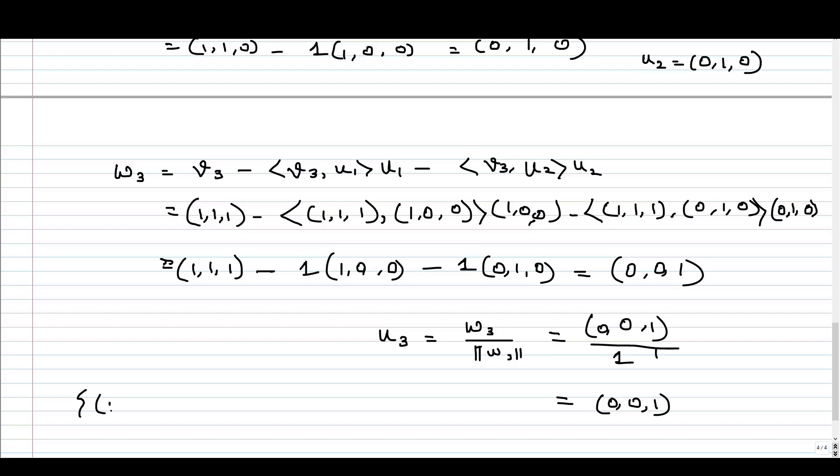So our new set of vectors here is (1, 0, 0), (0, 1, 0), and (0, 0, 1). These are the standard basis which we got by orthogonalization of the given basis. This is the standard basis.